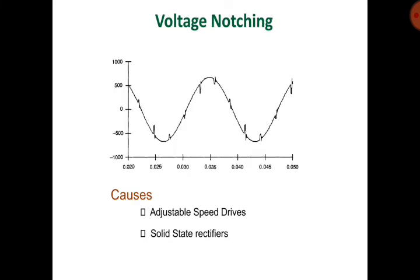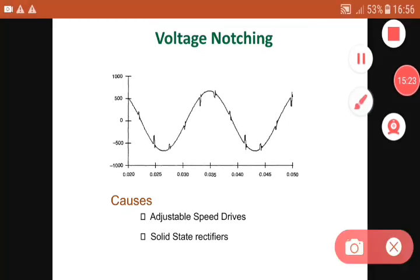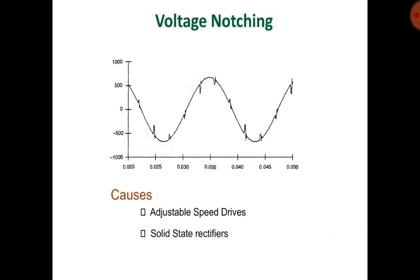Voltage notching can be observed in the voltage waveform — notches appear at certain points. Cases of voltage notching include adjustable speed drives and solid-state drives.